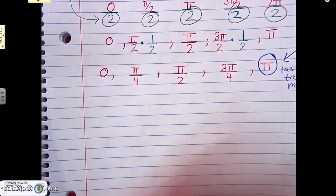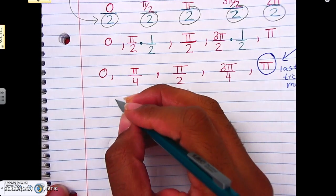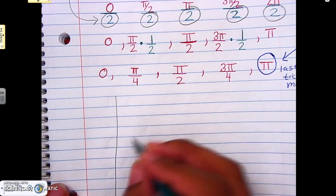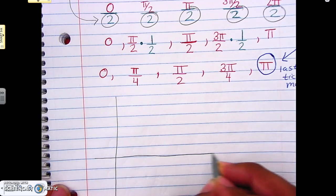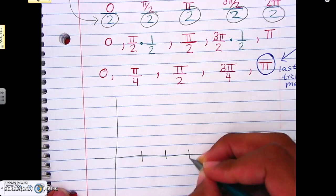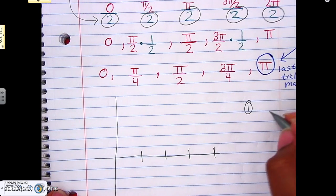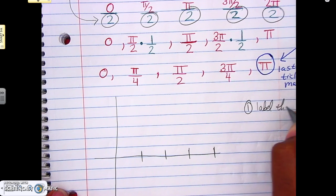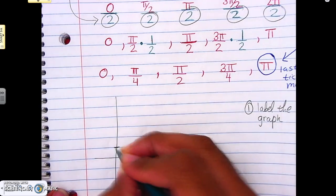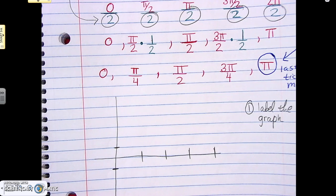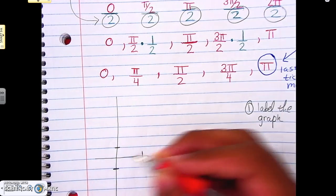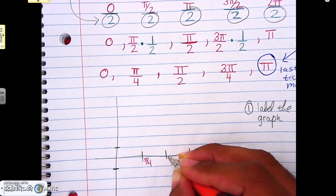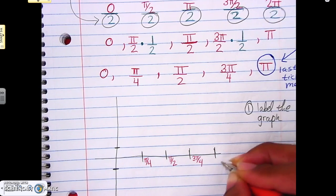Alright, so now the last thing is graphing. We're still going to pretty much follow the same process here. So for number one again, our first step is always to label the graph. So that means here, any type of changes that we make when it comes to tick marks or anything of that sort, that's what happens here, that's what changes here. So here our tick marks are different, so that means when we label this here, it's going to be different. So we know zero is still there, so that's still zero. π over 4 goes here, π over 2 is here, 3π over 4 is here. And π is right here now.